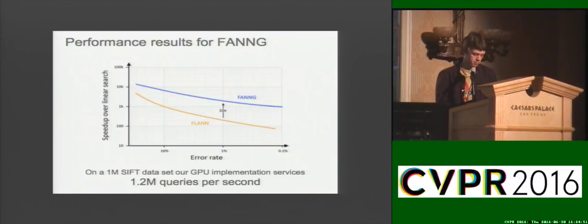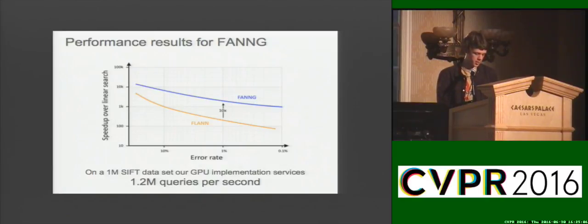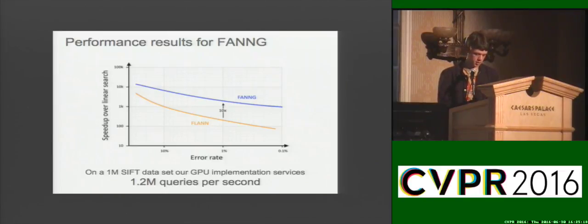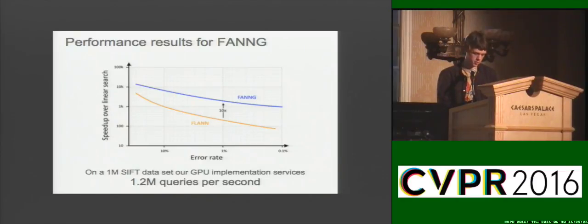By selecting an acceptable error rate, we can build a graph that provides fast query times for the level of accuracy we desire. Since performing pairwise calculations is the dominant cost of searching these data sets, we follow a standard practice of reporting results in terms of speed-up over linear search. FAANG consistently outperforms existing graph- and tree-based methods across various descriptor types and a wide range of recall values. Our GPU implementation is capable of servicing over 1 million queries a second.